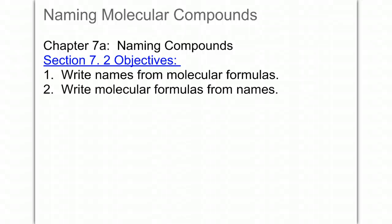Okay, section 7.2 is going to be naming molecular compounds. This is also known as covalent, if you don't realize. Molecular is synonymous with covalent. So we're going to write the names from the formulas, and we're going to do the opposite, write the formulas from the names.